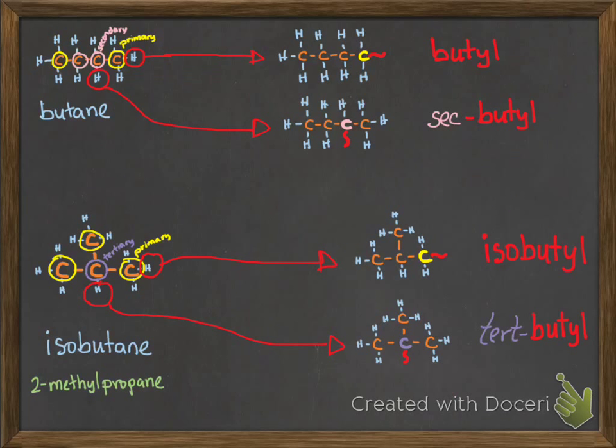Then we have the alkyl groups from butane. If we have straight butane, we have two possibilities: losing the hydrogen from the primary carbon to make butyl or from a secondary carbon to make sec-butyl.